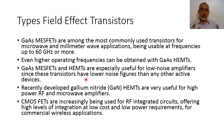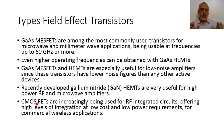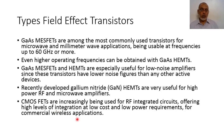Recently developed gallium nitride high electron mobility transistors are very useful for high power RF and microwave amplifiers. The advantage of gallium nitride HEMTs is that they can be used for high frequency and high power simultaneously. Gallium arsenide is useful for high frequency but not for high power. Complementary metal oxide semiconductor field effect transistors are increasingly being used for RF integrated circuits because CMOS is a common technology, offering high levels of integration at low cost and low power requirements for commercial wireless applications.